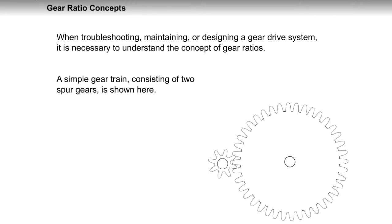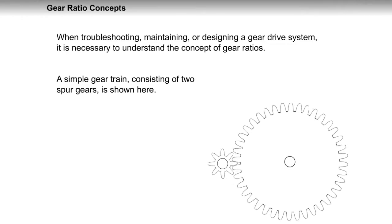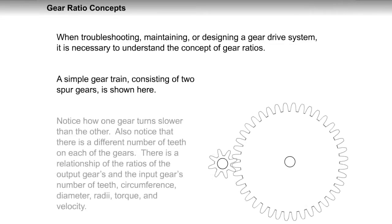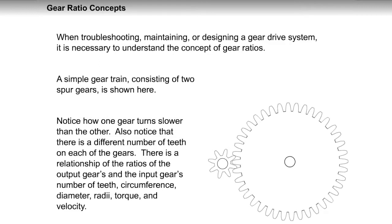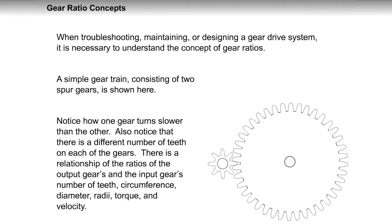A simple gear train consisting of two spur gears is shown here. Notice how one gear turns slower than the other. Also notice that there is a different number of teeth on each of the gears.